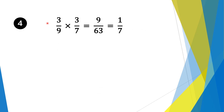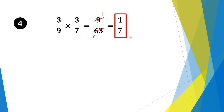Moving on to question 4. We have 3/9 times 3/7. So we multiply the numerators first: 3 times 3 is 9. And then we times the denominators: 9 times 7 is 63. Now top and bottom is divisible by 9. So 9 goes into 9 once, and 9 goes into 63 seven times. So our solution is 1 over 7.